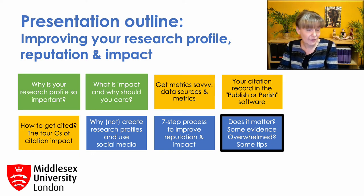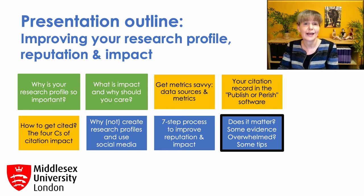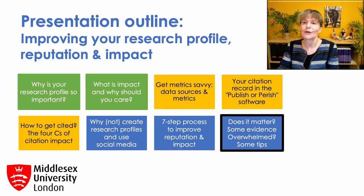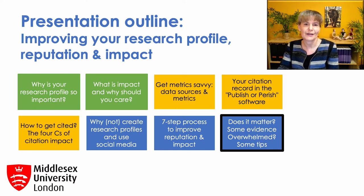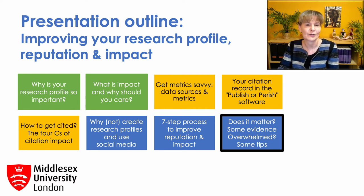I explained how you can find your citation record in the Publish or Perish software and how ethical and professional behavior can improve both your citations and other types of impact. The last three parts of the presentation were all about creating research profiles and using social media, including a very practical seven-step process. If you've missed any of them, do have a look as there are plenty of screenshots with examples for each step.